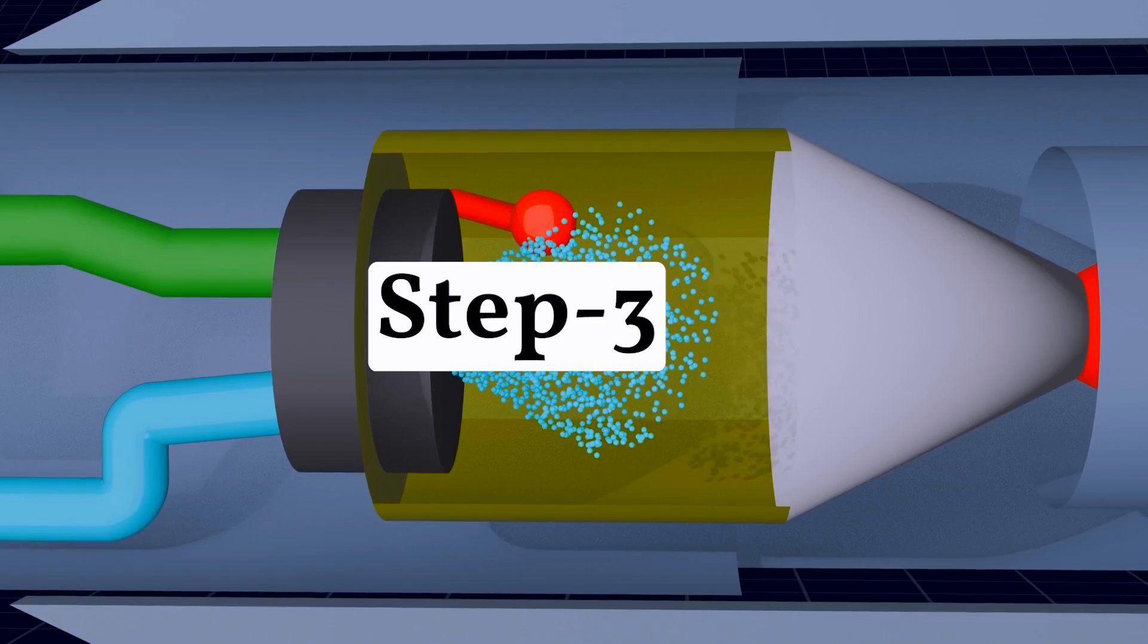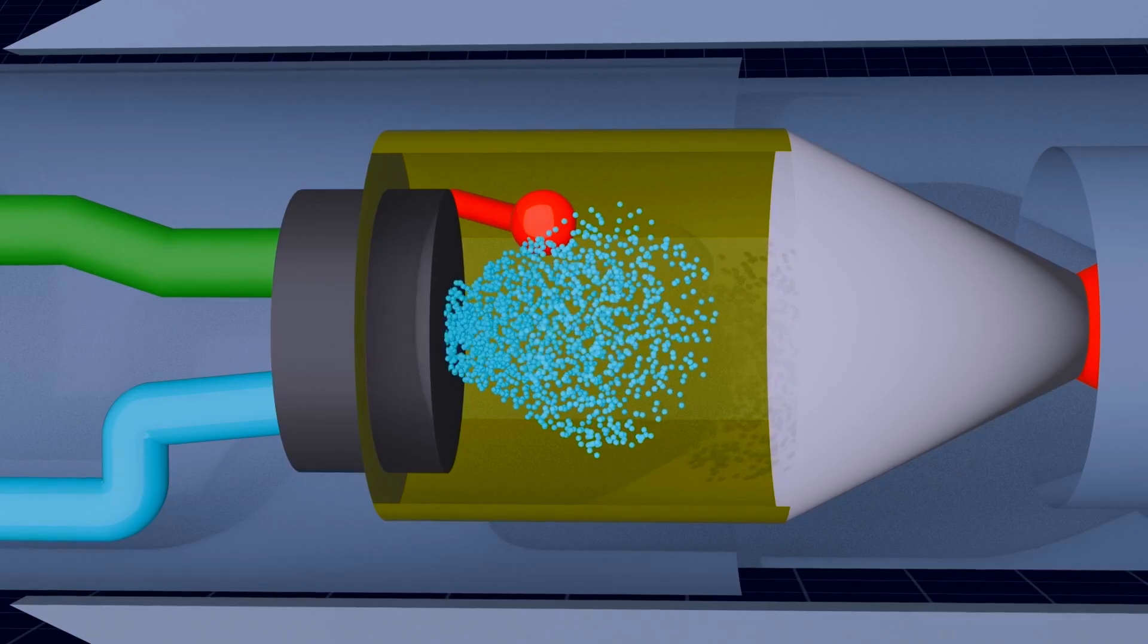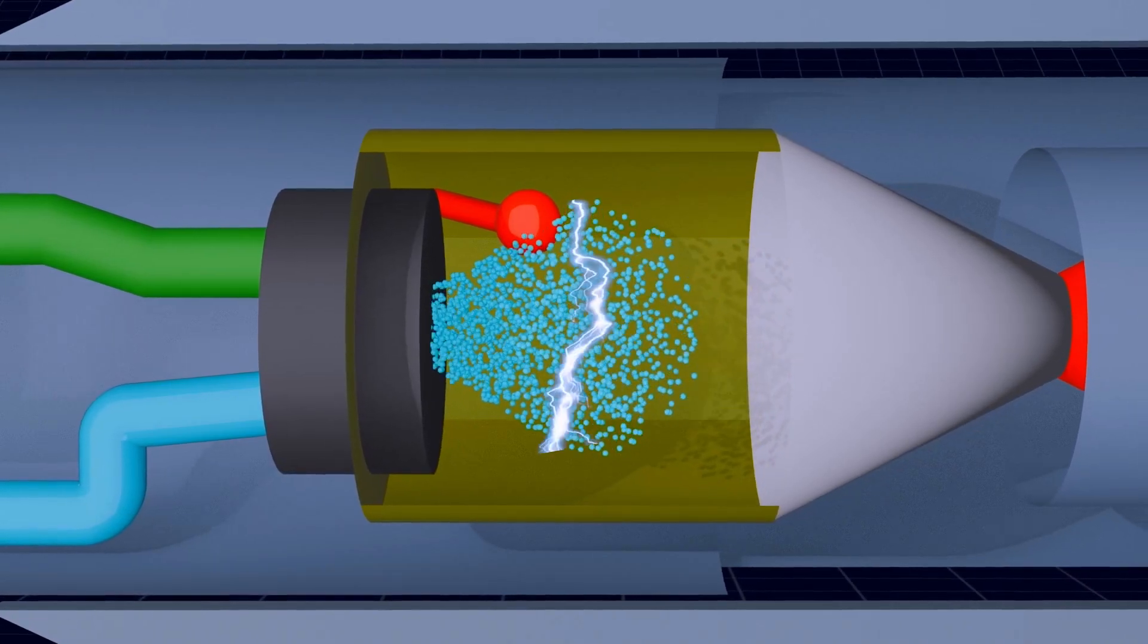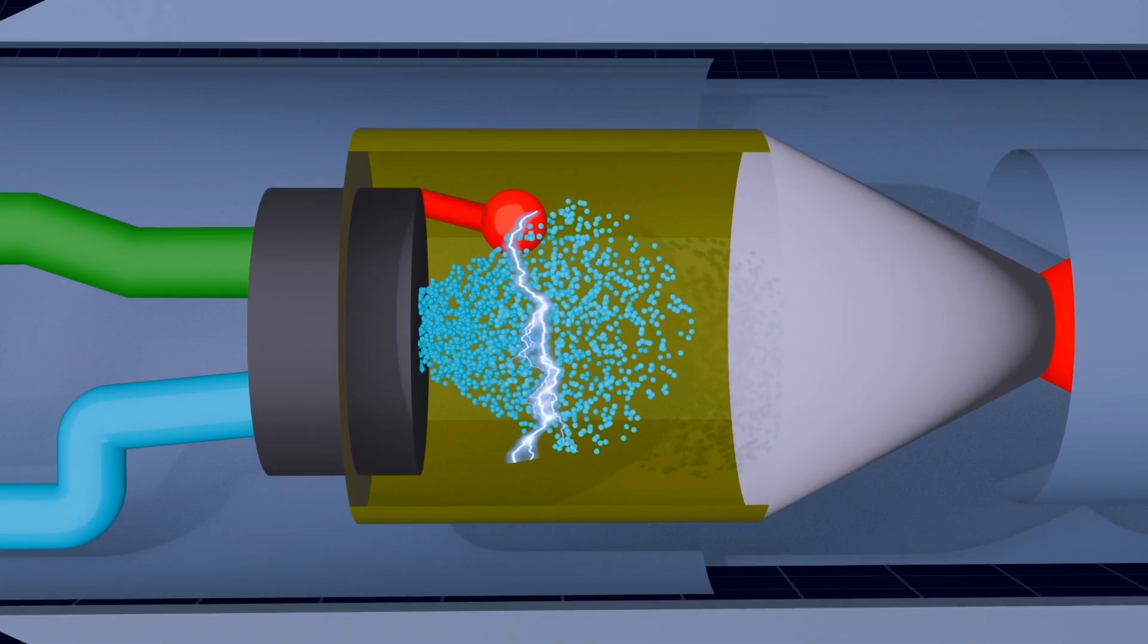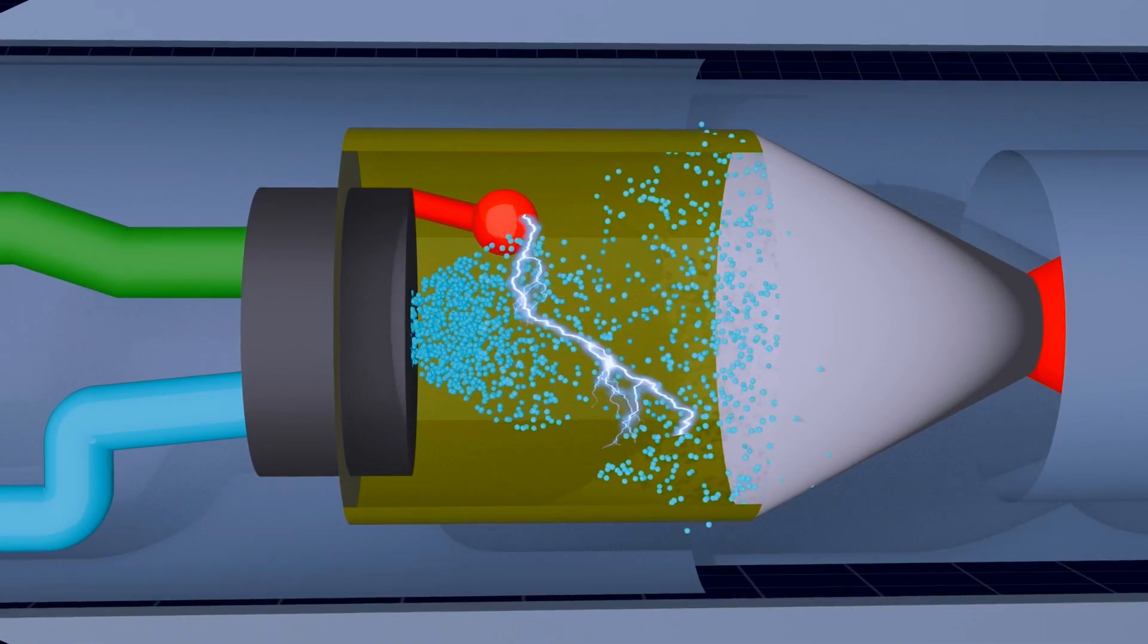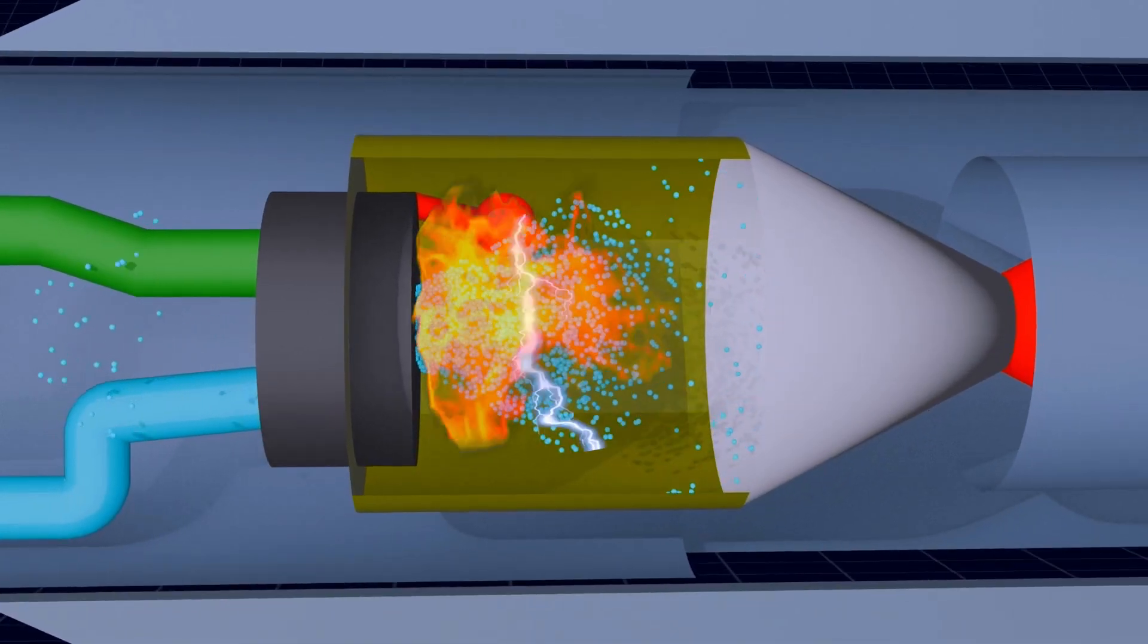Step 3: The igniter comes into action. High-voltage electricity creates sparks inside the combustion chamber. These sparks ignite the sprayed mixture of fuel and oxidizer.